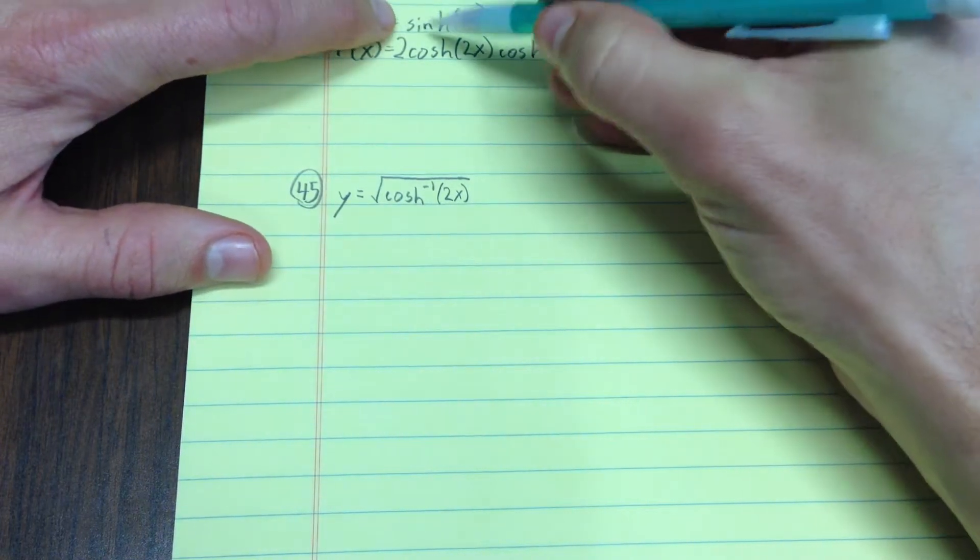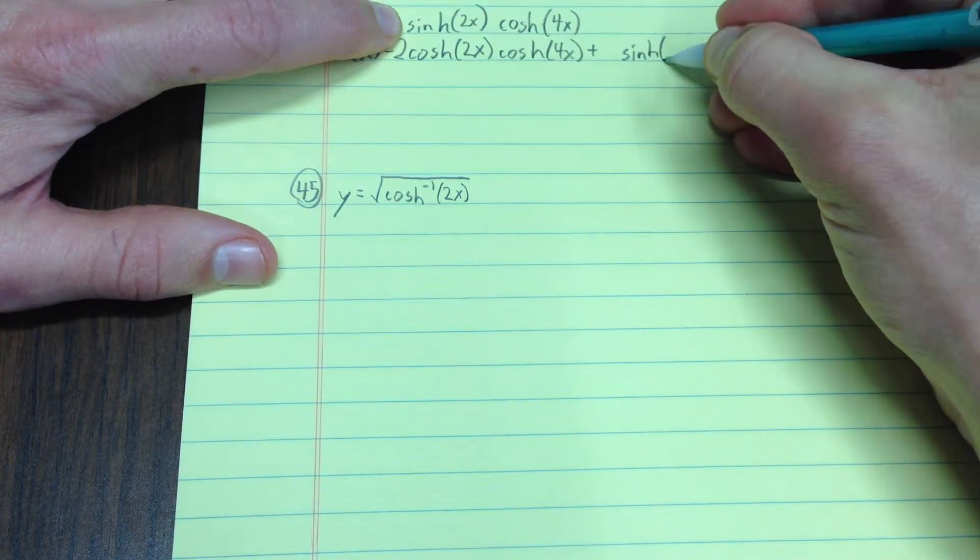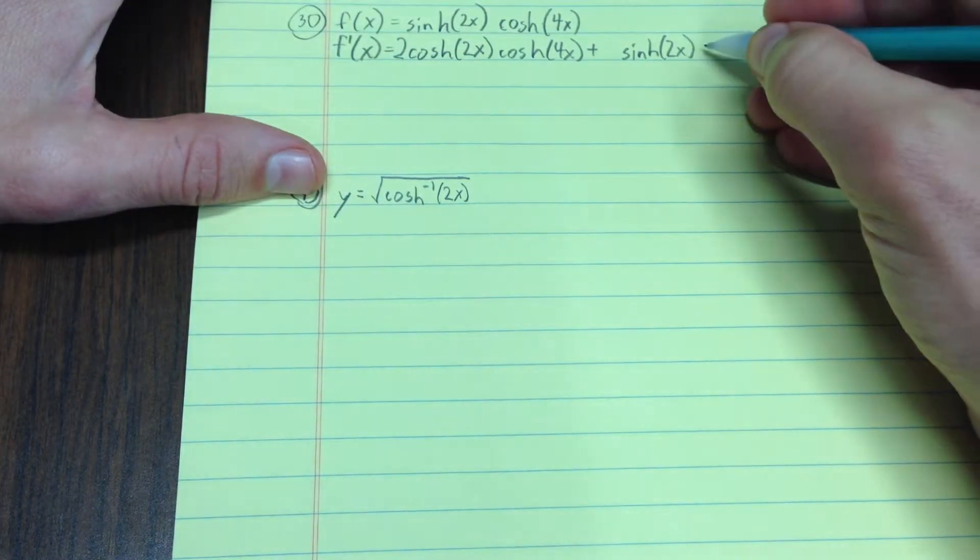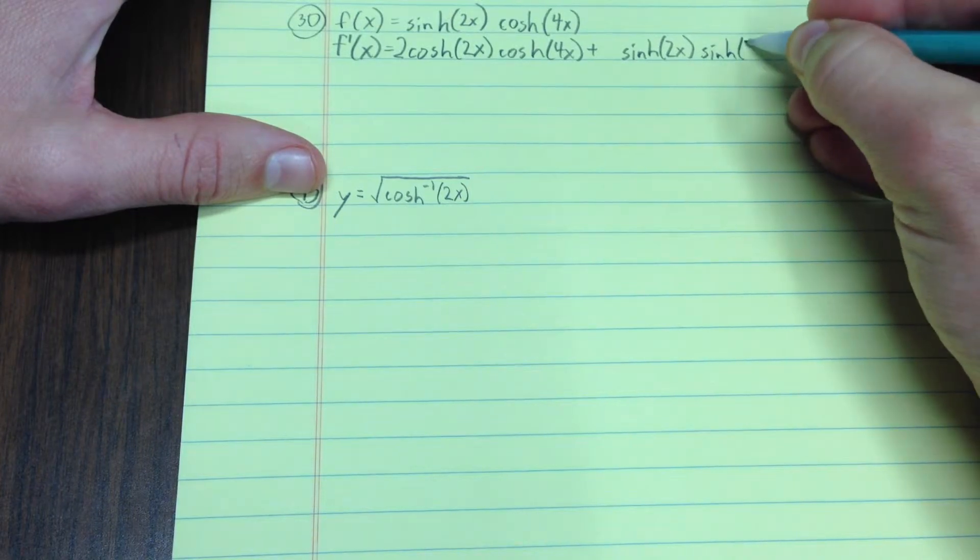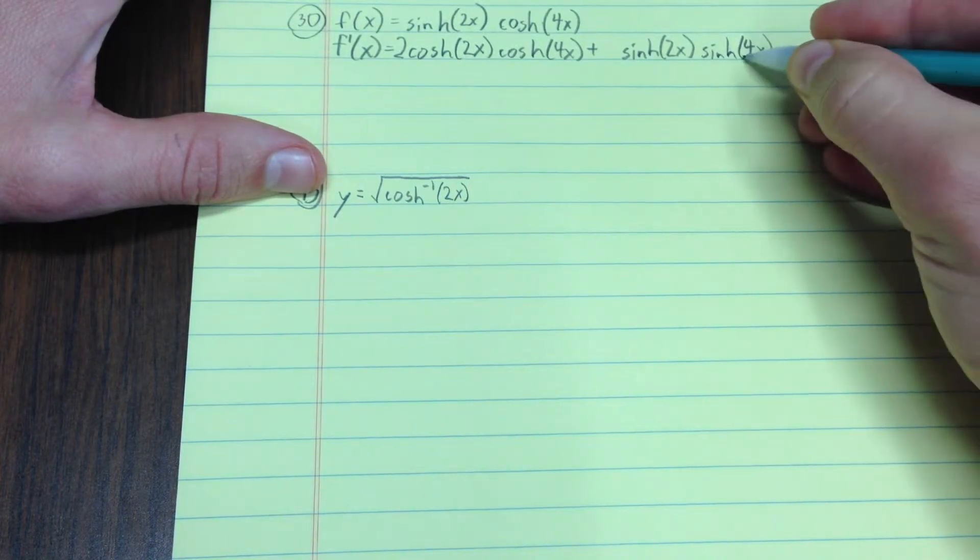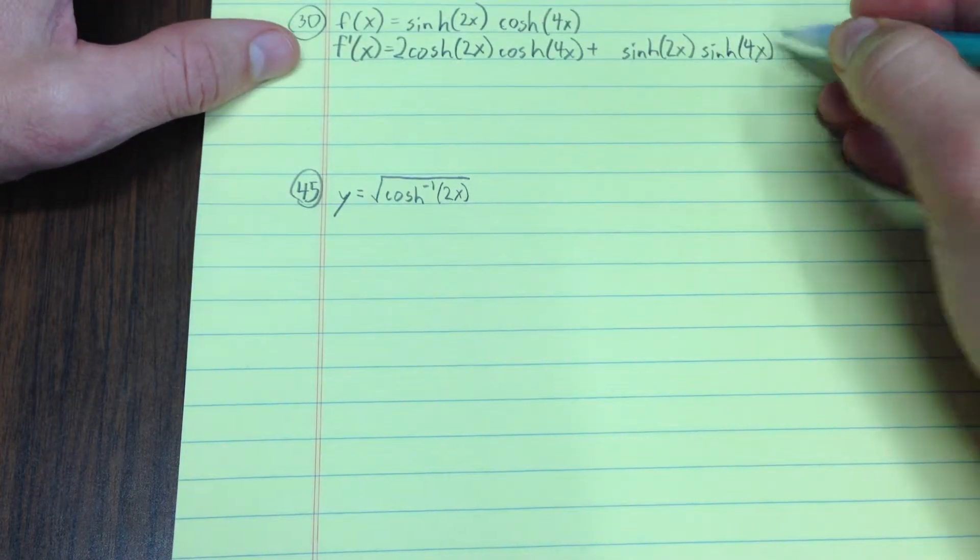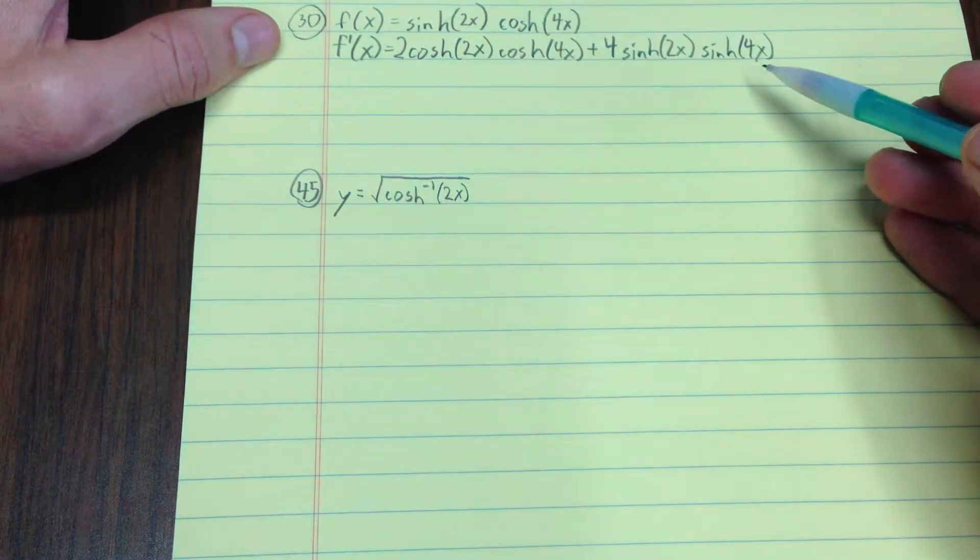Plus, I'm going to write the first piece unchanged, derivative of the second piece, that piece comes out sinh u, which is 4x, times the derivative of the inside, derivative of 4x being 4. You could write the 4 anywhere. Usually, we write it in front. So, that's the end of the first one.